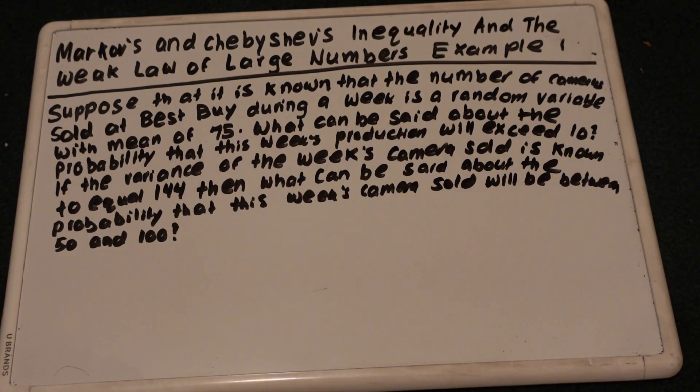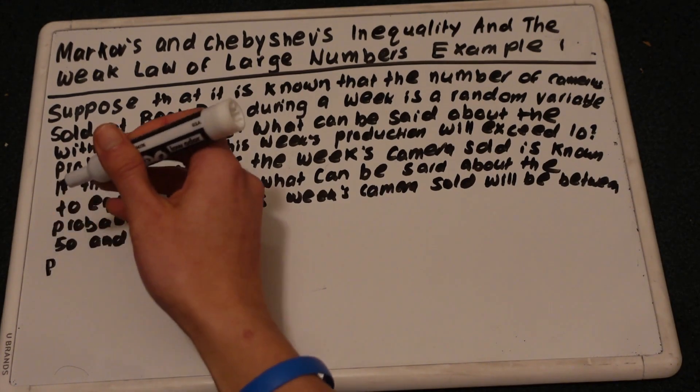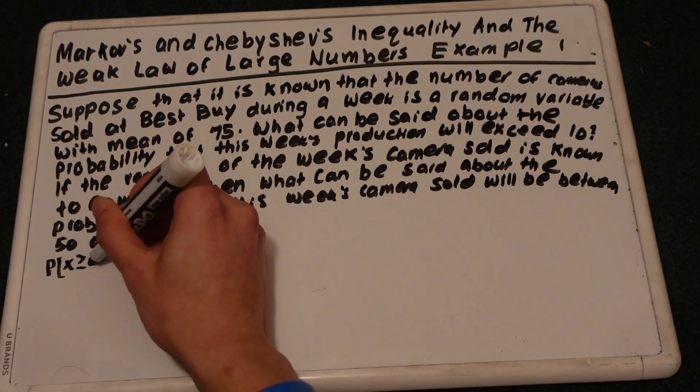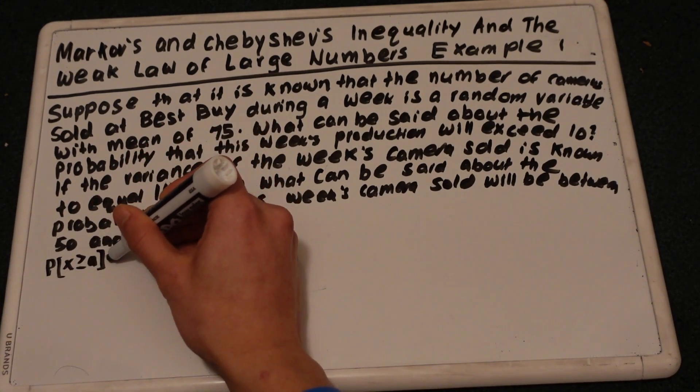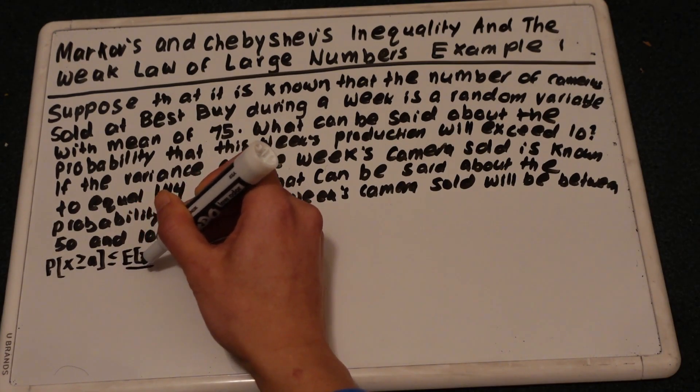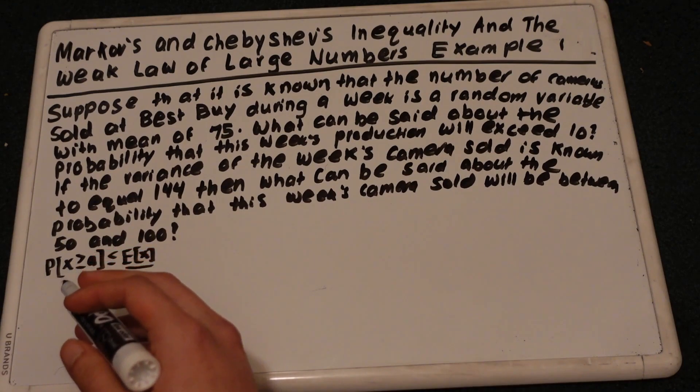So let me write down the formula for Markov's inequality. So it will be the probability that X is greater than or equal to A is less than or equal to the expectation of X, or that's the mean, over A. If X is a random variable that takes on only non-negative values, then for any A greater than 0, this is the Markov's inequality.